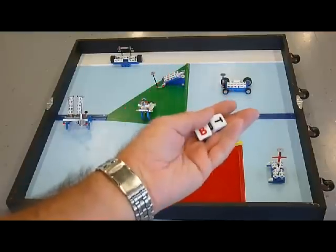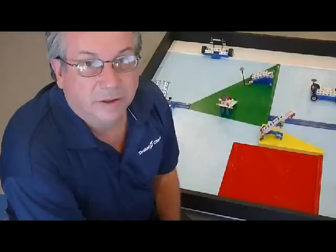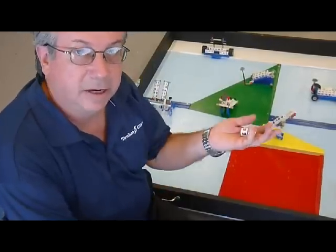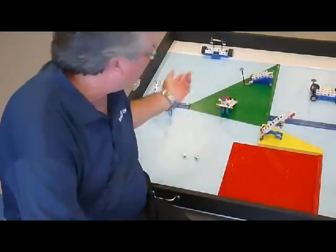These are the scoring objects for this game. Let's call them SeaBots. Scoring in this year's game is accomplished by getting the scoring objects into either of the Atlantic Ocean areas like so.